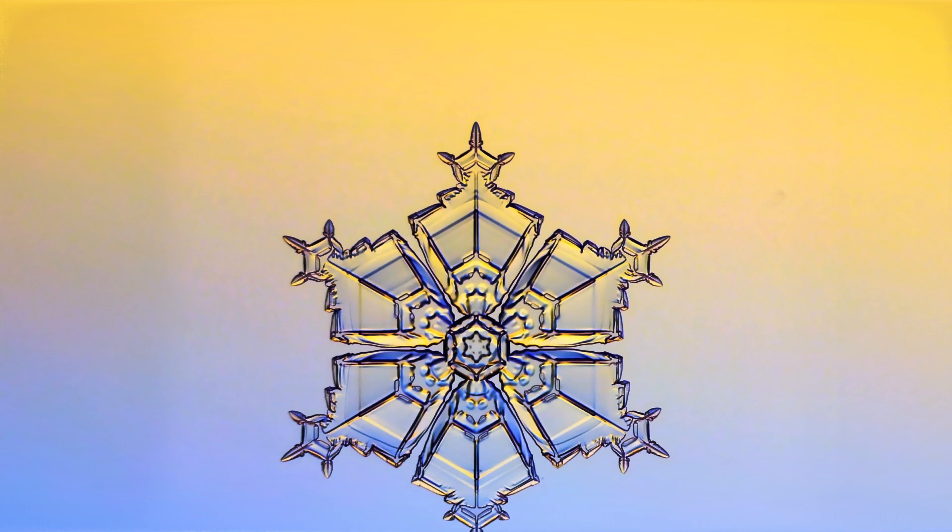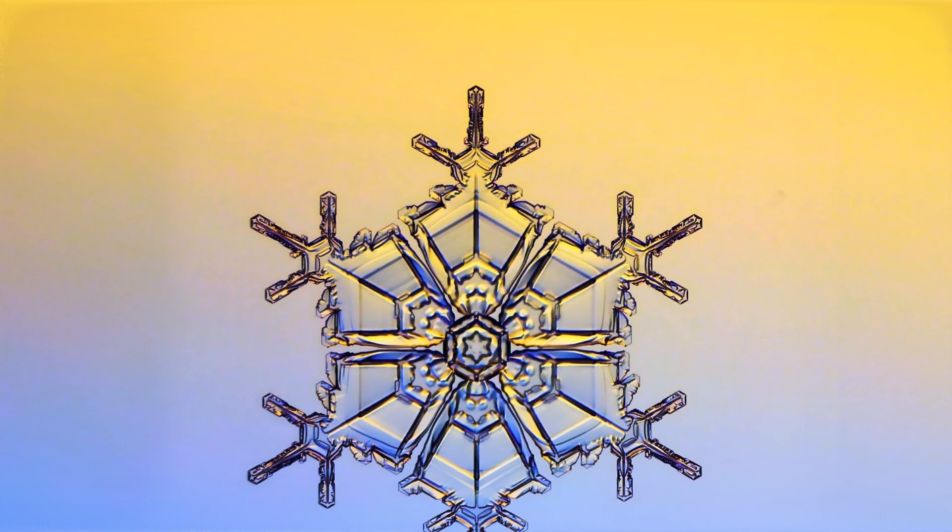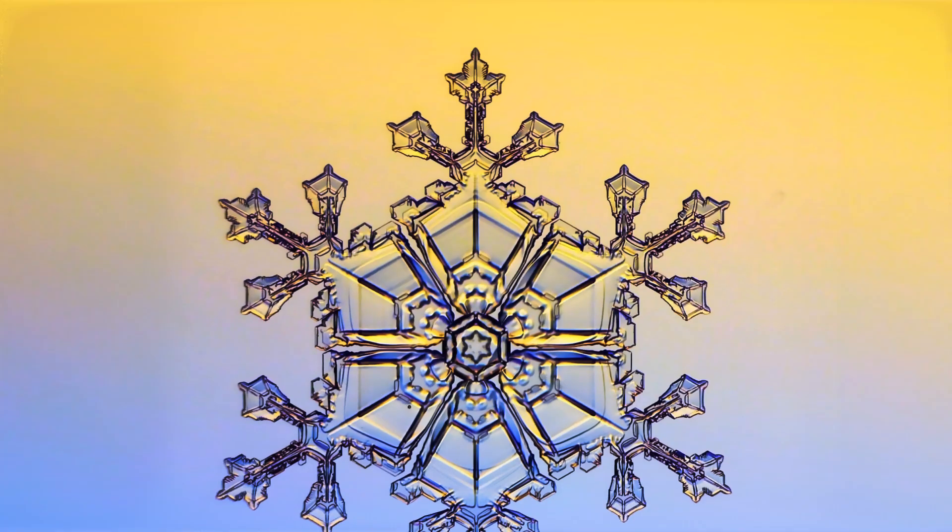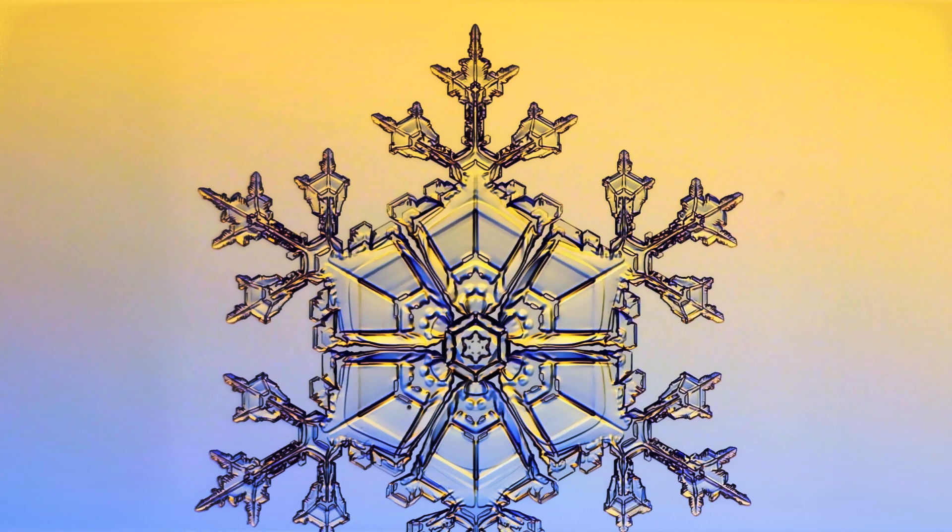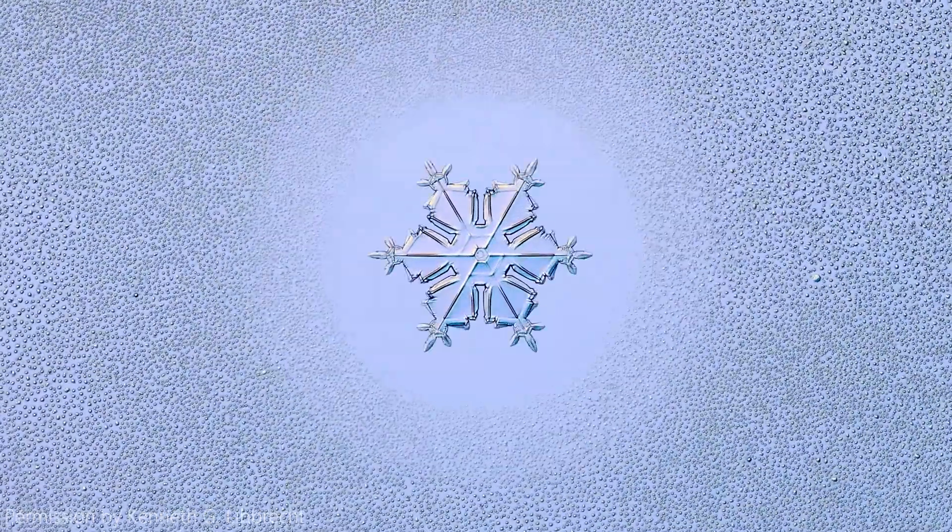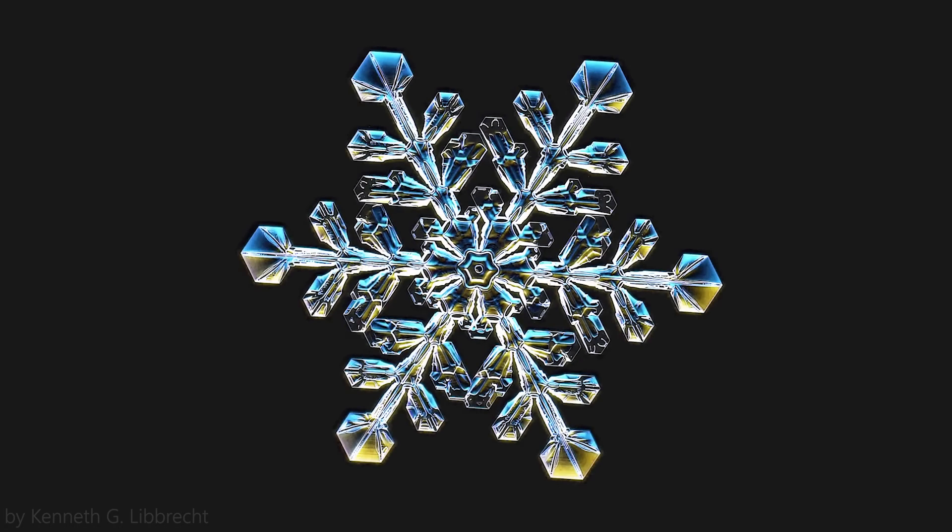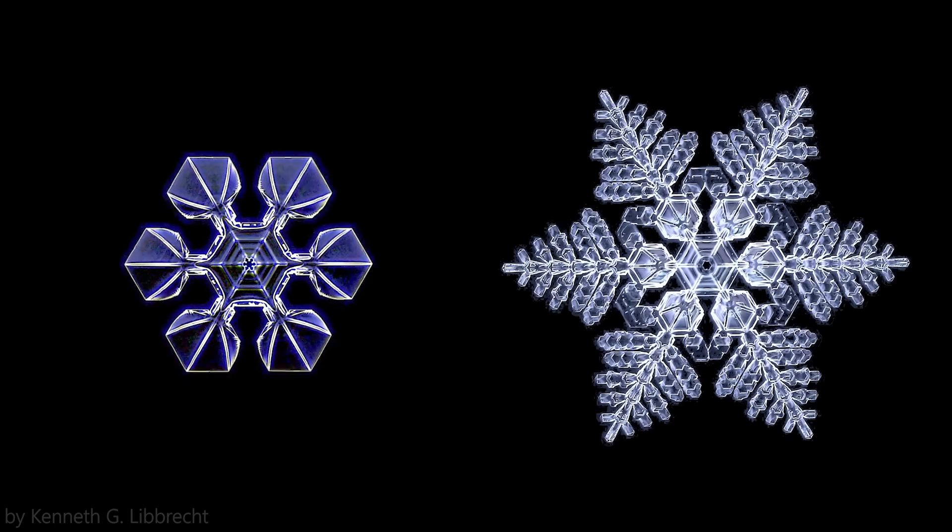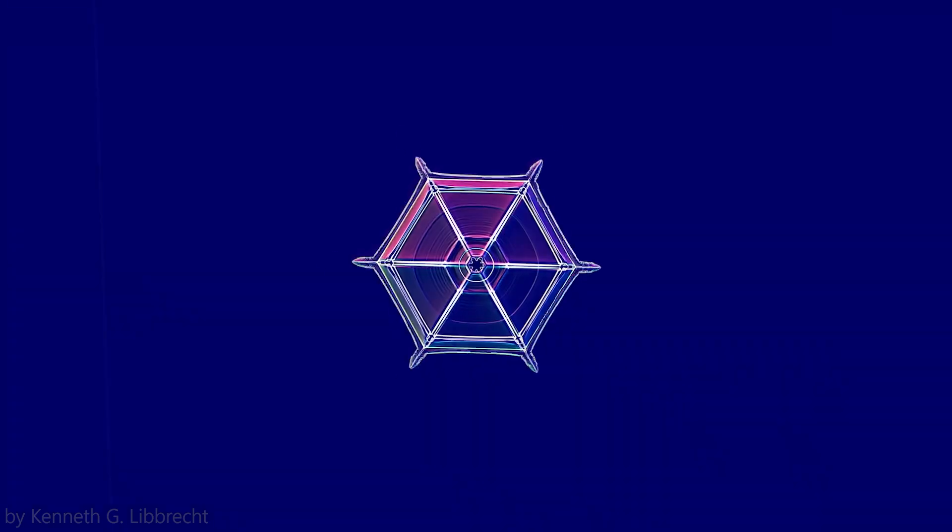A snow crystal begins with the formation of a small hexagonal plate and branches sprout from the six corners when the crystal grows larger. As it tumbles through the clouds, the crystal experiences ever-changing temperatures and humidities, and each change makes the arms grow a bit differently.